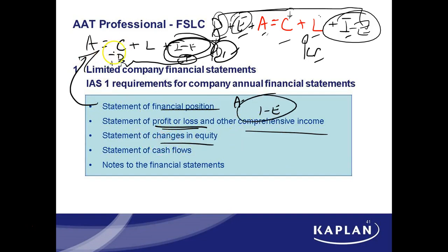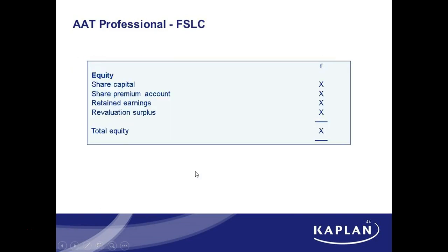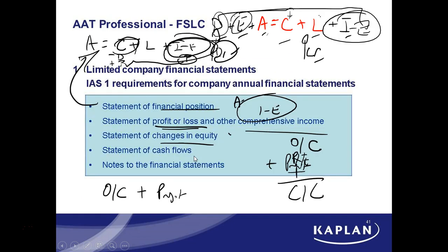Now the statement of changes in equity is really focusing on the C area — it's saying: you started the year with C, opening capital. Sometimes all the statement of changes in equity will be opening capital plus profit. Opening capital, and there might be some retained earnings or profit from before, plus profit — and that's it, closing capital. But with a sole trader, you'd have learned it was just opening capital plus profit, because for a sole trader you don't keep retained earnings separately.